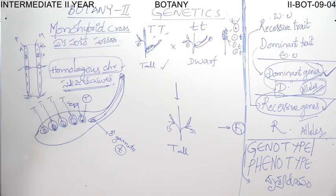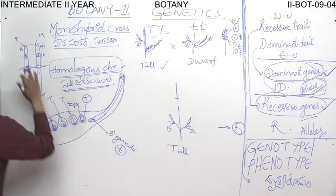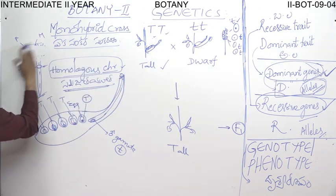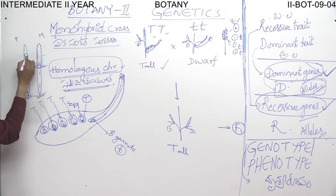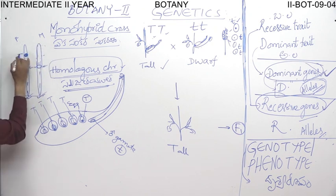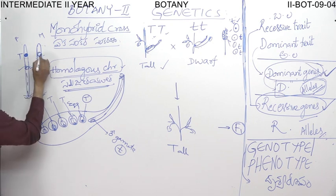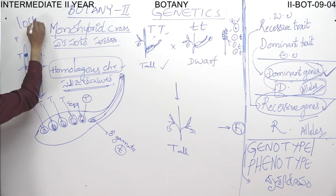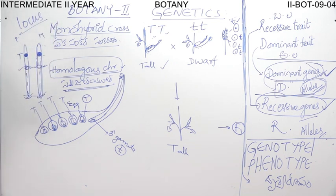These are the two homologous chromosomes. In this pair, suppose there is one gene on one chromosome — capital T — and on the other homologous chromosome, at the same locus, there is another gene. Locus means the specific place where a gene is present on the chromosome; that place is referred to as a locus.